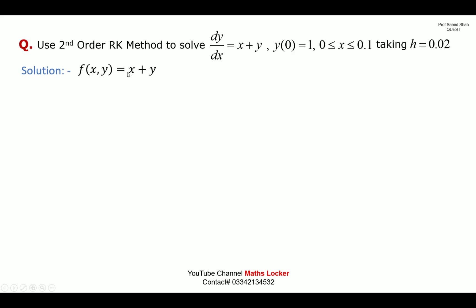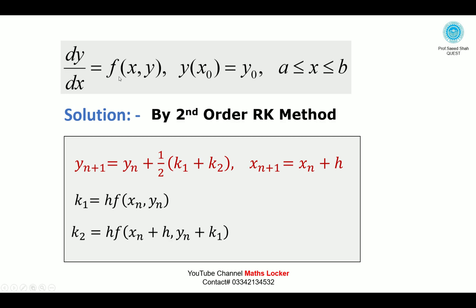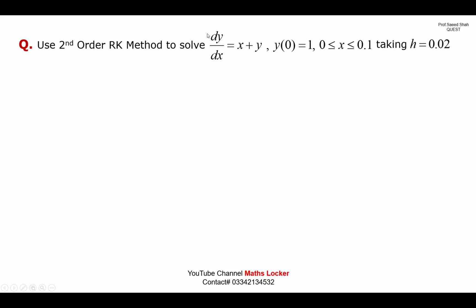Solution: f(x, y) = x + y, taken from the general format dy/dx = f(x, y). Replacing x by x_n and y by y_n (because the formula is given in terms of x_n and y_n), we can write f(x_n, y_n) = x_n + y_n.